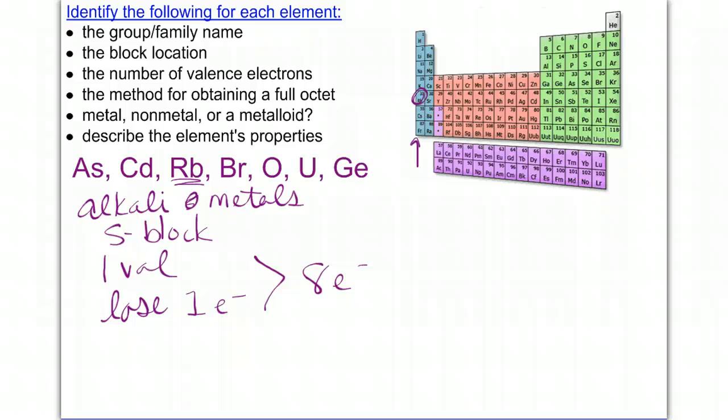Whether or not it's a metal, nonmetal, or metalloid, it is a metal, and therefore it has the properties of metals. But being an alkaline earth metal, let's be a little more specific. They're very soft metals. They're highly reactive metals. As a matter of fact, they're the most reactive metals, and they're going to be silvery in appearance.